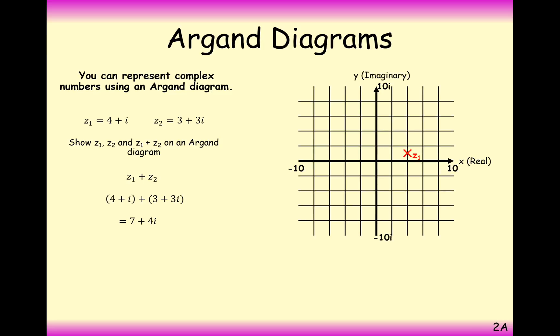And now let's plot these on a coordinate system. So z1 is 4 plus i, so 4 to the right, 1 up. Z2 is 3 to the right, and 3 up. And 7 plus 4i is 7 to the right, and 4 up. So we get z1 plus z2 here.